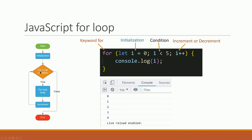Then we increment: four plus one is five. Now, is five less than five? Five is not less than five — the condition is false. The loop exits. You will have learned the lessons from this loop tutorial.